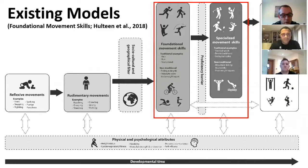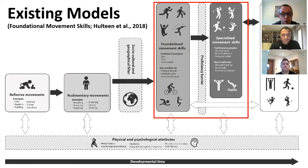We also know there's a range of existing theoretical models available in relation to what children should do from a physical and sport perspective. This is a model from Hultin in 2018 that introduces the idea around foundational movement skills — how these combine traditional and non-traditional activities, and how these progress to specialised movement skills, which are important for people to have a lifetime of physical activity.